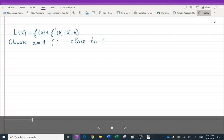Let's choose some kind of number, and we choose a equals 1. Why this is the case? Because a equals 1 is close to whatever they gave us, which is 1.04, and it's also easy to use.